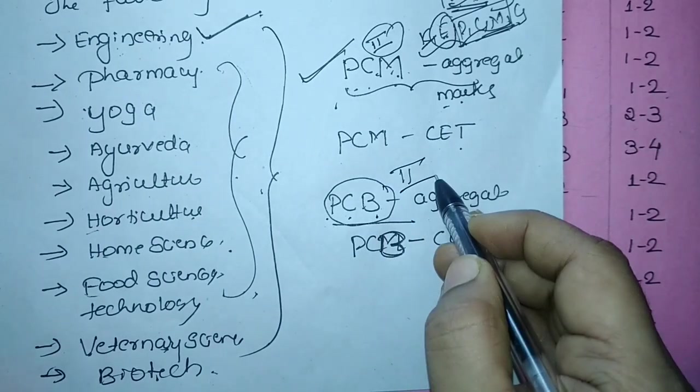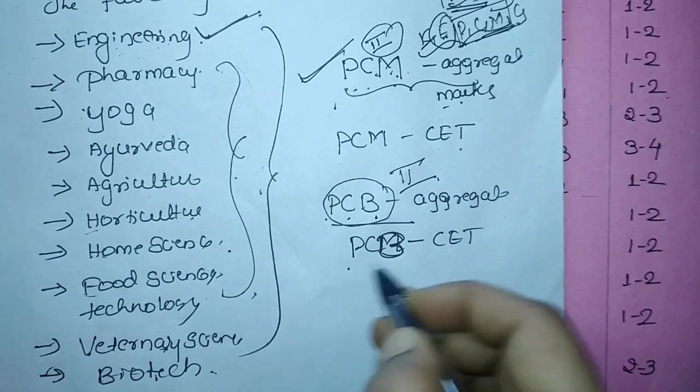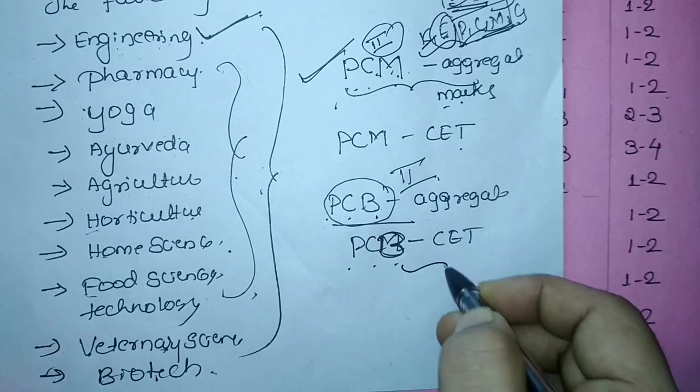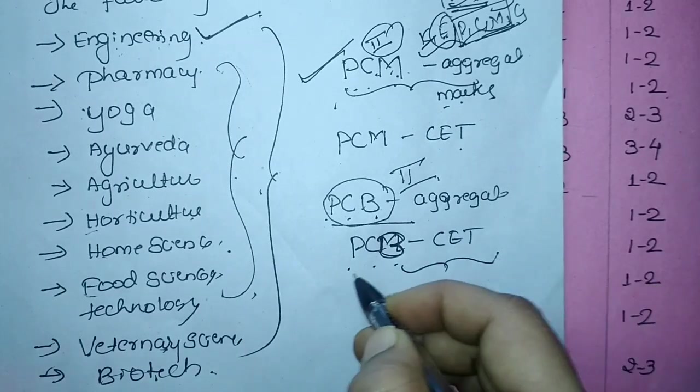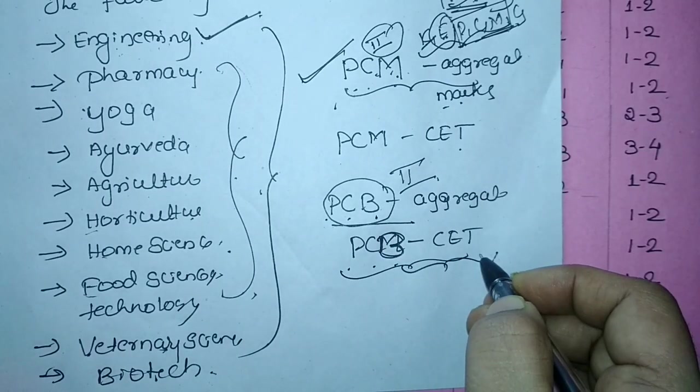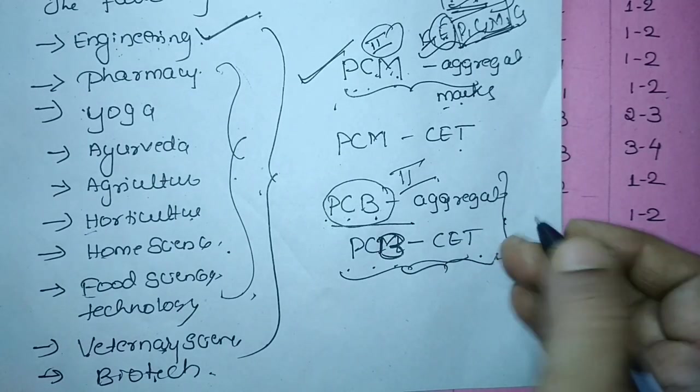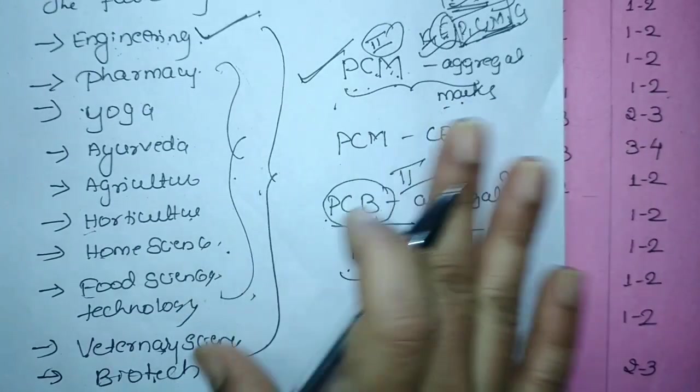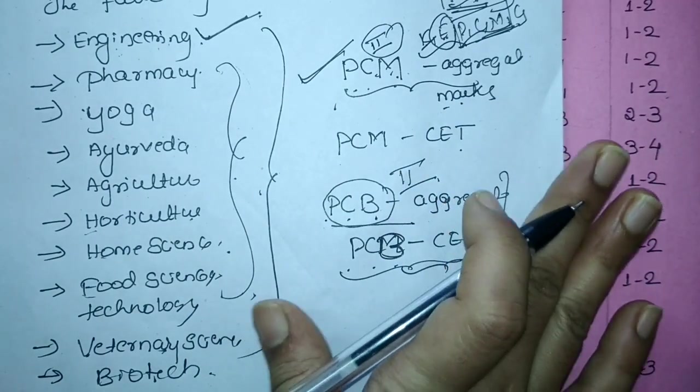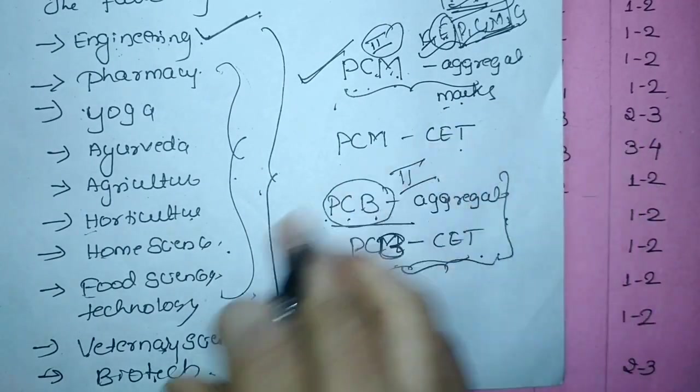And the physics, chemistry, biology CET marks. So this is what they have written. They combine these marks and they start allotting the ranking according to that. So this is like a brief part of Karnataka CET exam. How exactly it will be conducted?